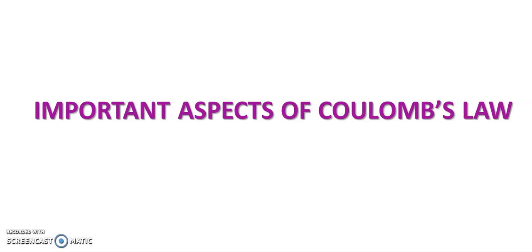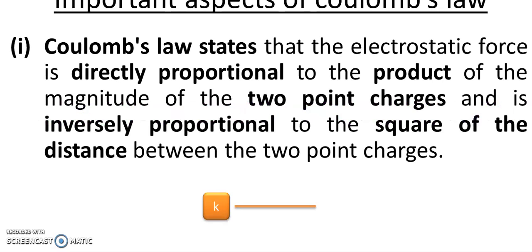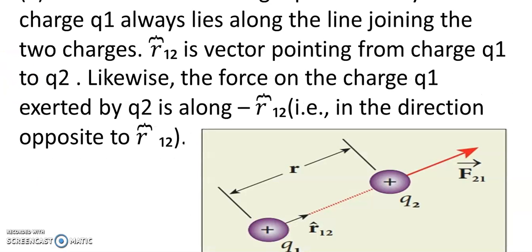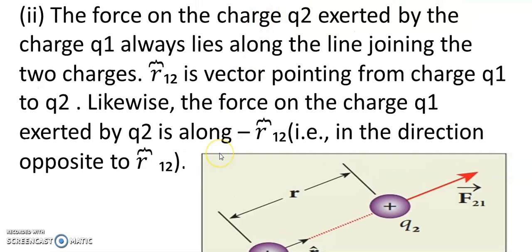Important aspects of Coulomb's law: Coulomb's law states that electrostatic force is directly proportional to the product of the magnitude of two point charges Q1 and Q2, and inversely proportional to the square of the distance between the two point charges. The force on charge Q2 exerted by charge Q1 always lies along the line joining the two charges. R12 is a vector pointing from charge Q1 to Q2.